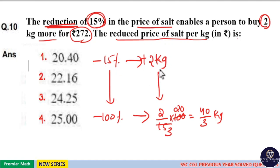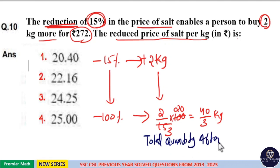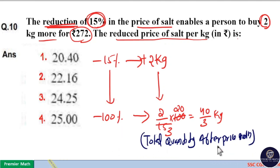Here this 15% reduction leads to 2 kilogram, and this 2 kilogram leads to this 40 by 3 kilogram, which means this is total quantity after price reduction. This 40 by 3 kilogram is derived from this 2 kilogram.